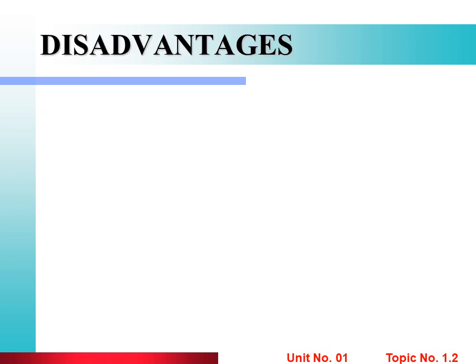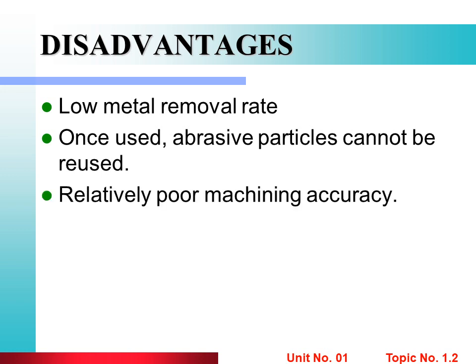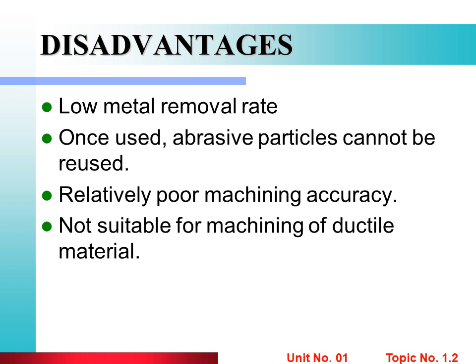Disadvantages of Abrasive Jet Machining: 1. Low metal removal rate — material removal rate is low. 2. Once used, abrasive particles cannot be reused, because they lose their cutting ability during the working process. 3. Relatively poor machining accuracy — the accuracy achieved on the workpiece is relatively poor. 4. Not suitable for machining of ductile materials. 5. Taper is also a problem — taper holes can be produced in abrasive jet machining.